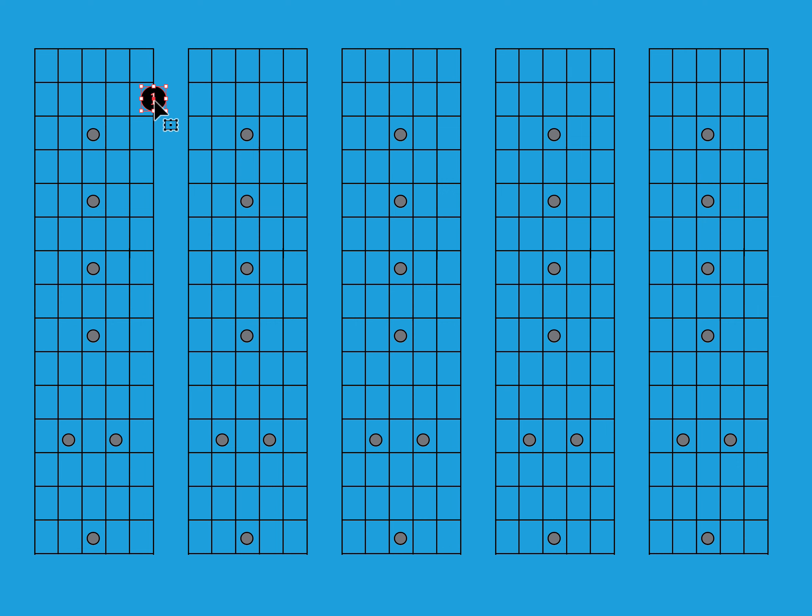First fret to second fret is also a half step and that's on any string. If we start in the low E string and move to here that's a half step, this is a half step, this is a half step. This would be two half steps or this would be three half steps, four half steps.